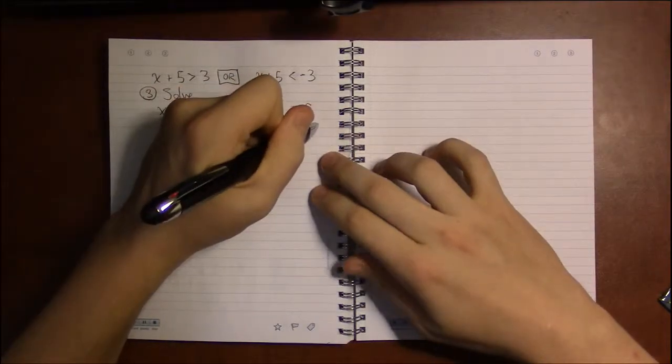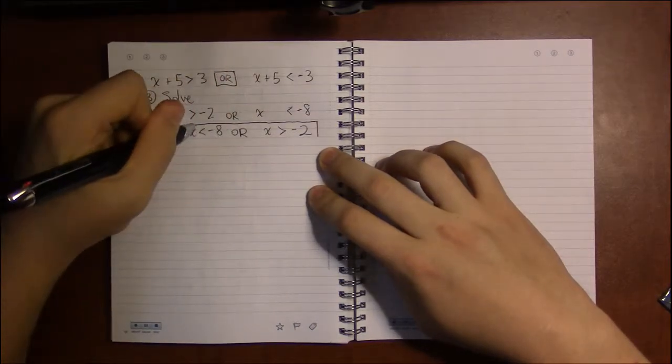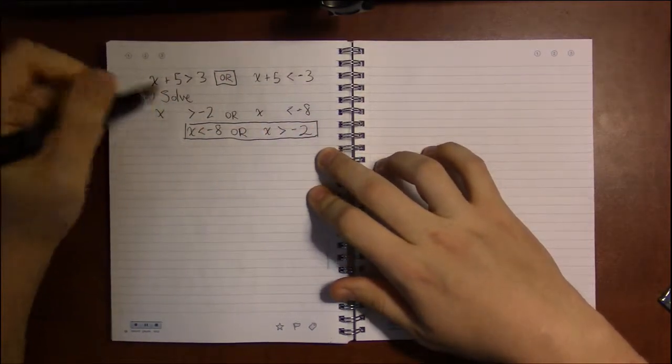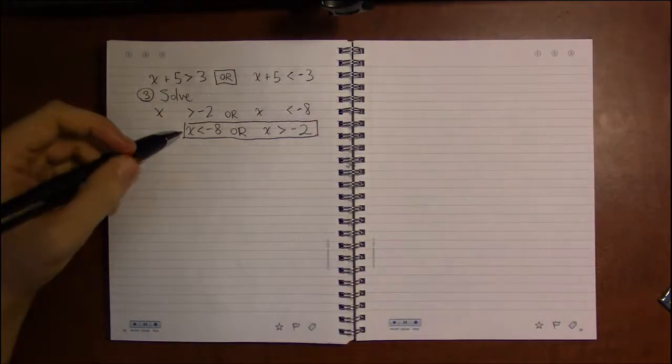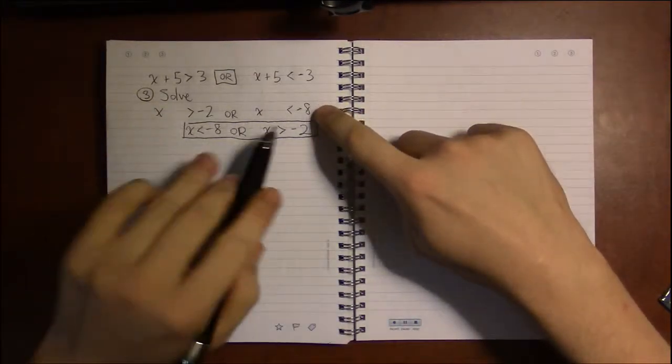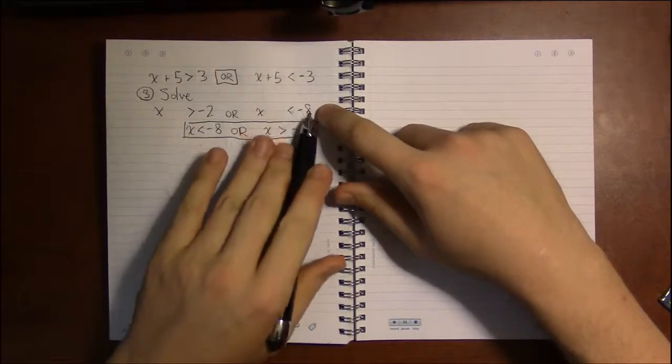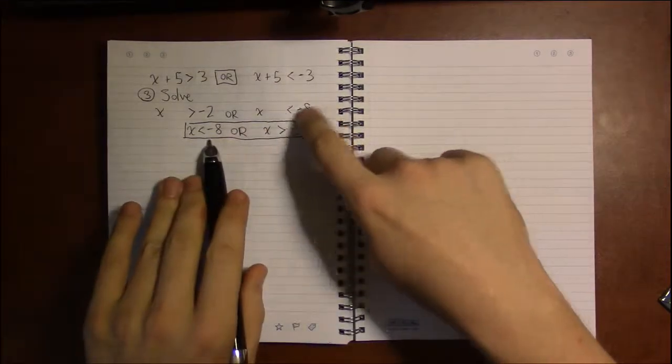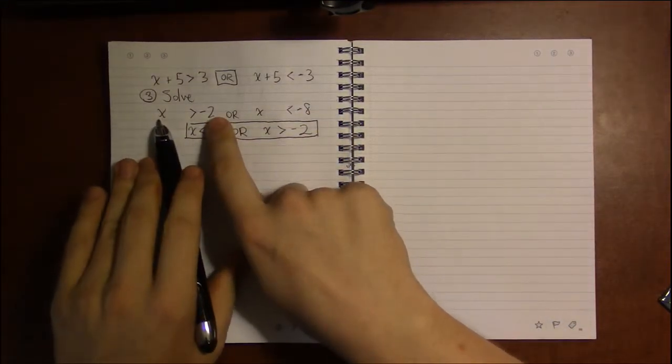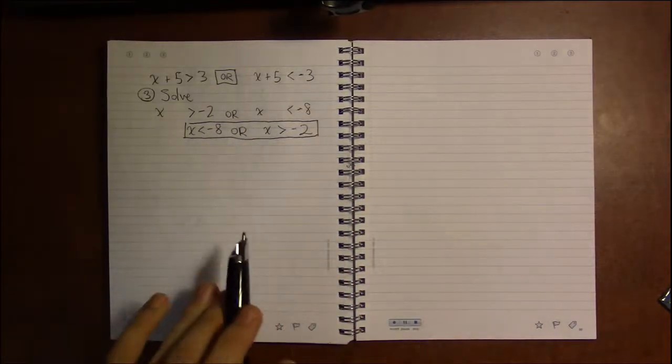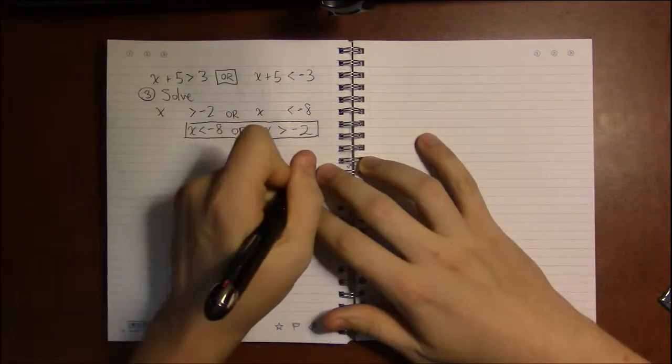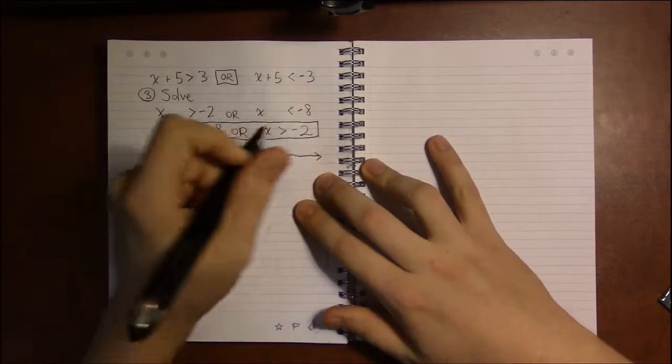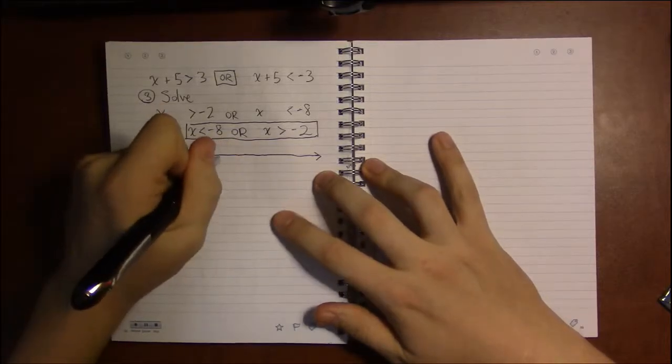That is a perfectly good way to write your answer. I'm just writing it this way so I can get—you know, minus 8 is smaller than minus 2. So I'm putting the inequality with the smallest number on the left and the inequality with the largest number on the right. That's just so that when I do the number line and the interval notation, it's a little bit easier to see what's happening.